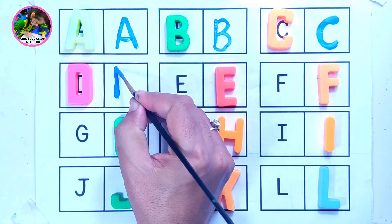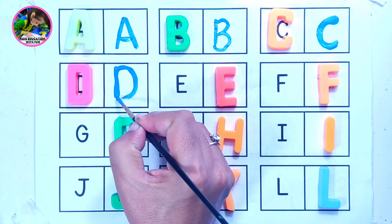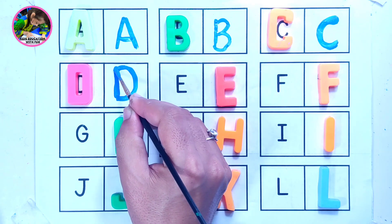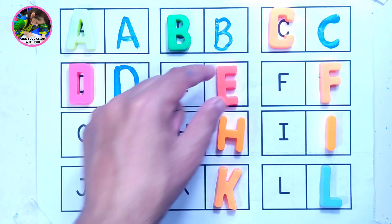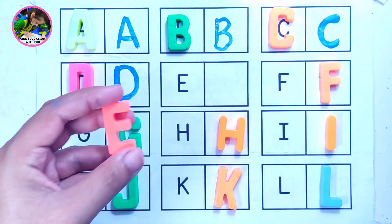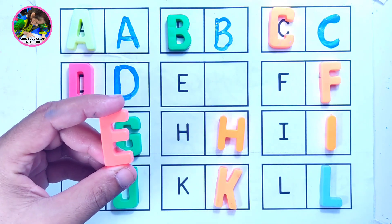Next to letter D is letter E. E is for elephant. This is letter E. E is for elephant.